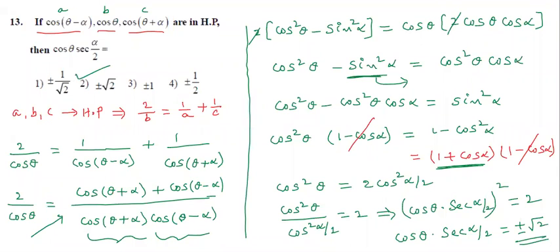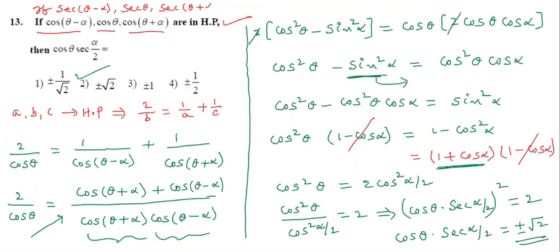Which option is correct? The second option is correct. They will also give another method: if sec(θ − α), sec θ, sec(θ + α) are in AP, then find cos θ · sec(α/2). Same method applies. AP is the reciprocal of HP — cos terms in HP is equivalent to secant terms in AP.